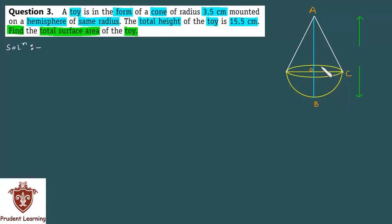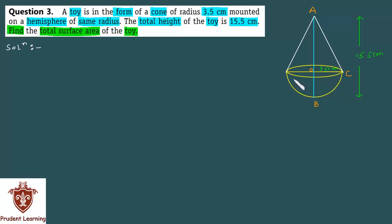Looking at the measurements: the total height of the toy AB is 15.5 cm. Since the cone and hemisphere share the same radius, OC (the cone's radius) is 3.5 cm and OB (the hemisphere's radius) is also 3.5 cm.